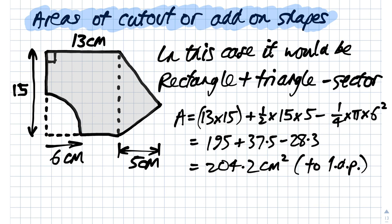In terms of actual calculations for this, the rectangle here is 13 by 15. The triangle has base of 15 and height of 5, so it's half times base times height. And the quarter circle is a quarter of a full circle—quarter pi times 6 squared. When we calculate it out, we end up with 204.2 centimeters squared correct to one decimal place.